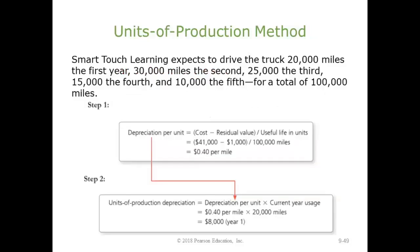So let's take a look at this one with units of production. Smart Touch Learning expects to drive the truck 20,000 miles the first year, 30,000 the second, 25,000 the third, 15,000 the fourth, and 10,000 the fifth — totaling 100,000 miles altogether. What I want to look at is my depreciable cost per unit. I've got my cost minus my residual value, divided by the useful life in units.